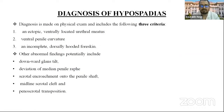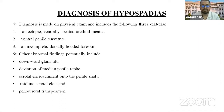Diagnosis of hypospadias is mainly made on physical examination, including three criteria: number one, ectopic ventrally located urethral meatus; number two, ventral penile curvature; and number three, incomplete dorsally hooded prepuce. Other abnormal findings include downward glans tilt, deviation of the median raphe, scrotal encroachment into the penile shaft, midline scrotal cleft, and penoscrotal transposition.